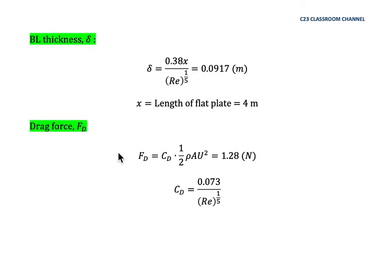Since there is no specific velocity profile given, we use the 1/7 power law as the velocity profile for the turbulent boundary layer. From the previous lesson, δ = 0.38x / Re^(1/5). Substituting the values, we get δ = 0.0917 meters.